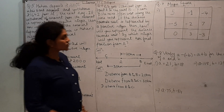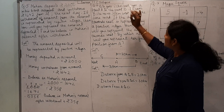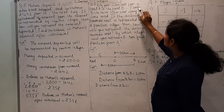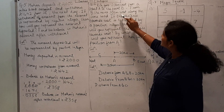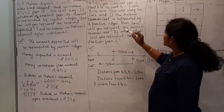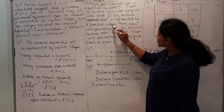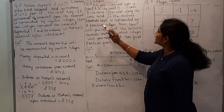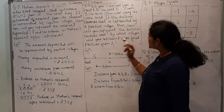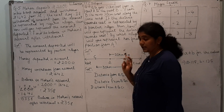Now we will switch to question 6. Rita goes 20 km east from a point A to point B. From B, she moves 30 km west along the same road. If the distance towards east is represented by a positive integer, then how will you represent the distance towards west? By which integer will you represent her final position from A?